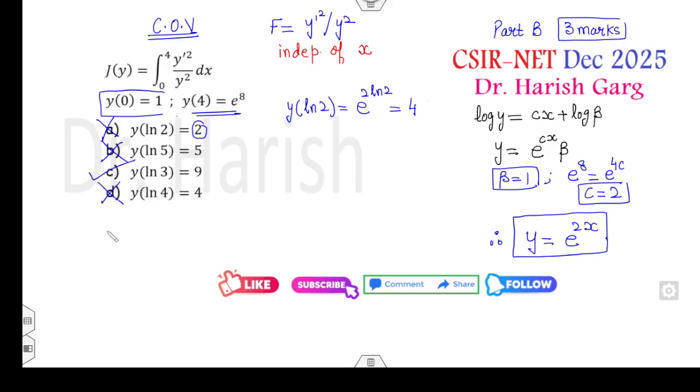Now, this is a totally memory-based question. If you have a solution like this, y of ln 2 plus y of ln 4, you can get the answers accordingly. Fine. And so, because these are totally memory-based questions. These are the options I received from students. I have the options here.